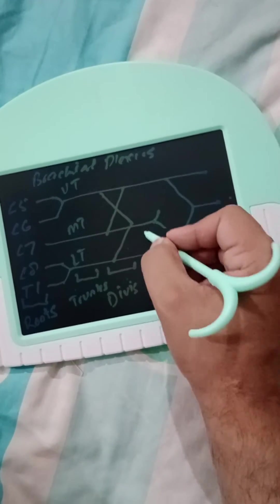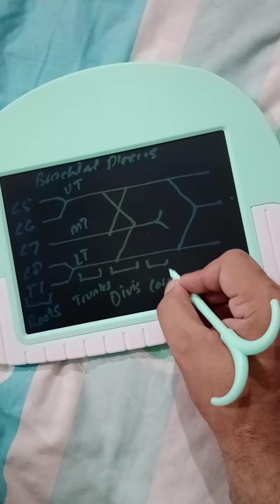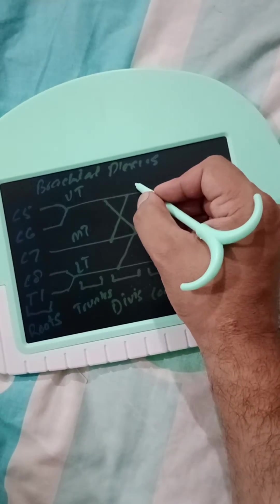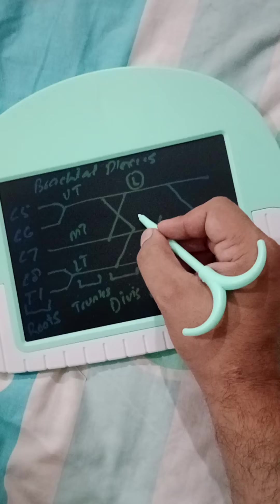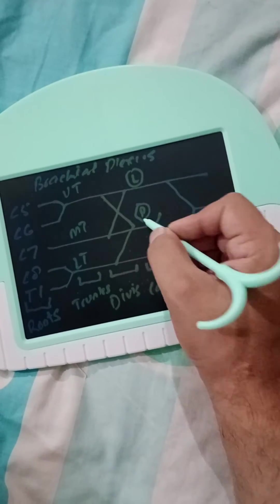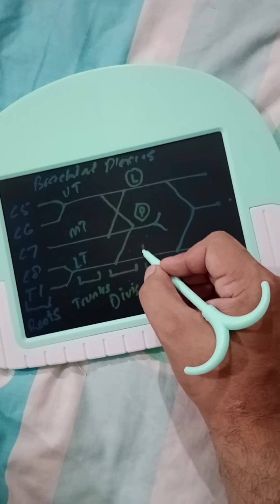These are three cords. This is lateral cord, this is posterior cord, and this is medial cord.